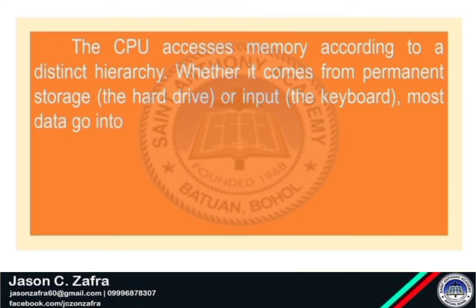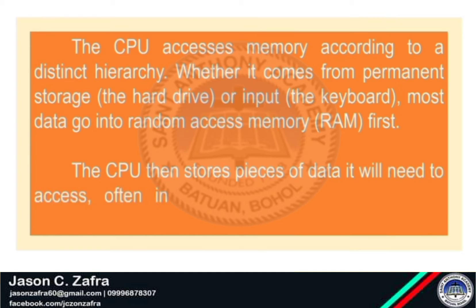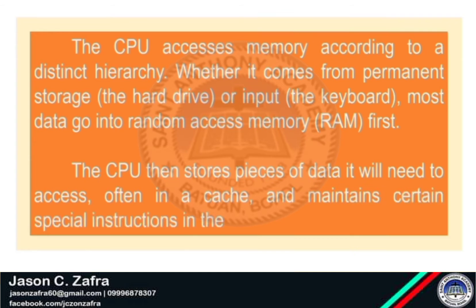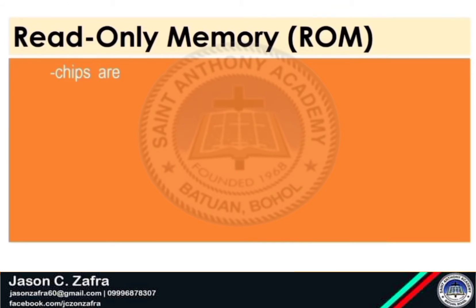The CPU accesses memory according to a distinct hierarchy. Whether it comes from permanent storage or the hard drive, or input from the keyboard, most data go into random access memory first. The CPU then stores pieces of data it will need to access, often in a cache, and maintains certain special instructions in the register.